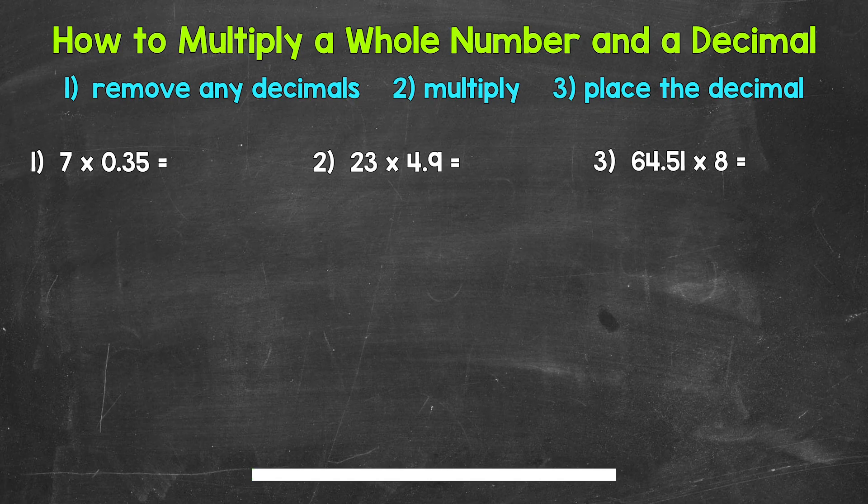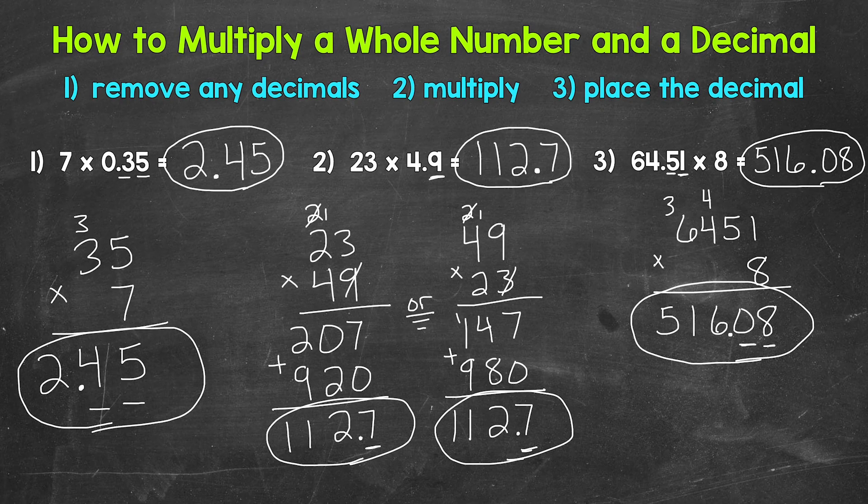Okay, so that was three minutes. Let's go over the answers. Here are our answers. For number one, seven times 35 hundredths equals two and 45 hundredths.